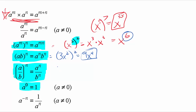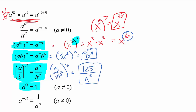Similarly, if this was a fraction — say 5 over n to the fifth — and I raise this to the third power, I would take 5 to the third power and n to the fifth to the third power. 5 to the third is 125 (5 times 5 times 5). On the bottom, n to the fifth to the third means multiply the exponents to get n to the 15th power.